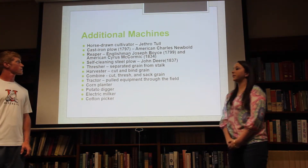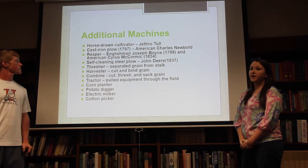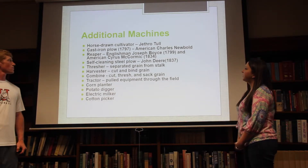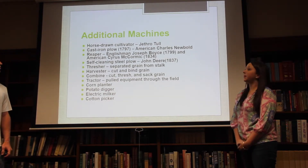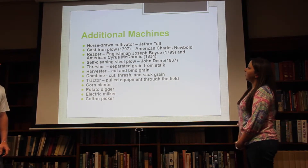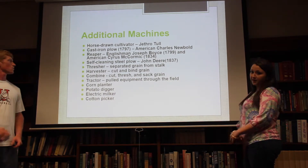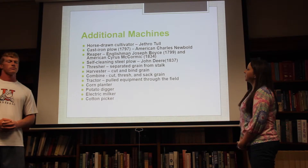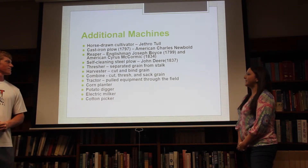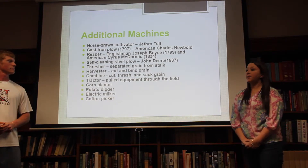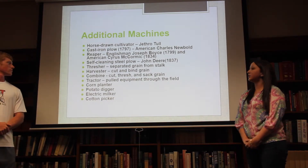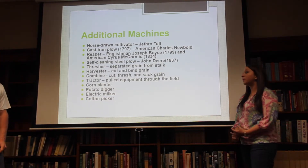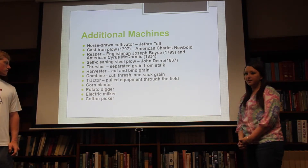Additional machines introduced during the industrial and agrarian revolutions included the horse-drawn cultivator, also invented by Jethro Tull; the cast iron plow invented by American Charles Newbold; the Reaper by Englishman Joseph Boyce and American Cyrus McCormick; and the self-cleaning steel plow by John Deere. There was also the thresher, which separated grain from stock; a harvester that cut and bound grain; a combine that cut, threshed, and sacked grain; the tractor, which pulled equipment through the field; as well as the corn planter, potato digger, electric milker, and cotton picker.